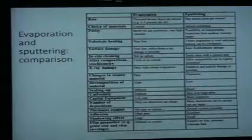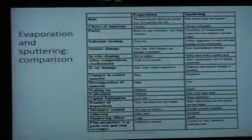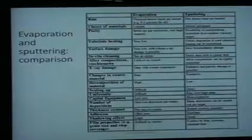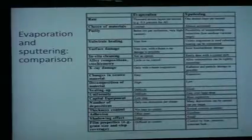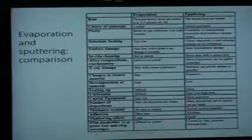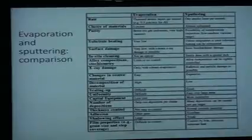Sputtering is easier to scale up because it's a plasma process and you spread that plasma over a large area, whereas E-beam evaporation is a single beam and doesn't scale to large areas in the same way. You also get much better adhesion with sputtering, which is important. In our lab, we need the metal layers we deposit to stick to the substrate because if they delaminate, our device is broken, and sputtering helps with that quite a bit.